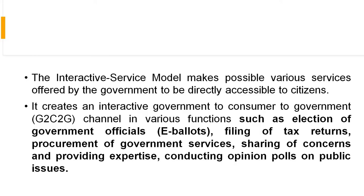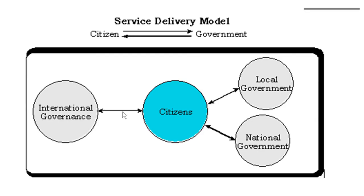Looking at the diagram, it consists of international governance, citizens, local government, and national government. Local means within the area, national means your country, and international means outside your country. So everywhere, citizens can freely participate.